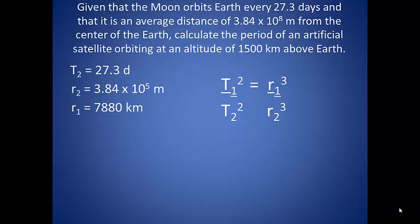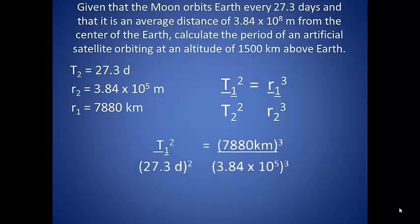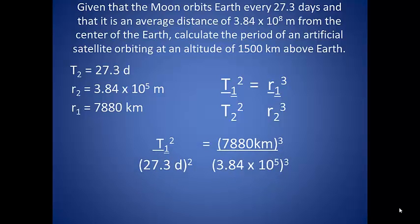So plugging this in and relying on that scientific calculator to get us through all of those exponents, we find that the orbital period of the satellite to be 0.080 days or 1.93 hours.